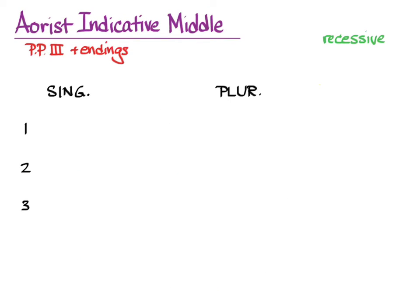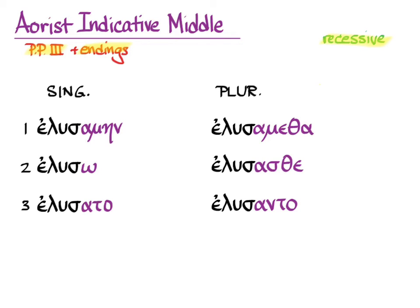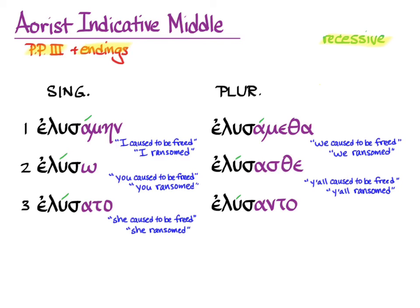Let's conjugate using the third principal part stem with augment and all the endings. We get: elusamein — 'I caused to be freed' or 'I ransomed'; eluso — 'you caused to be freed' or 'you ransomed'; elusata — 'she caused to be freed' or 'she ransomed'; elusamitha — 'we caused to be freed' or 'we ransomed'; elusastha — 'y'all caused to be freed' or 'y'all ransomed'; and elusanta — 'they caused to be freed' or 'they ransomed.'